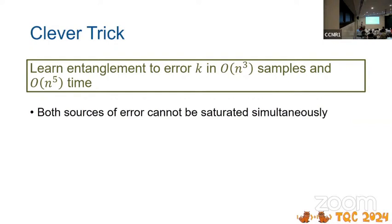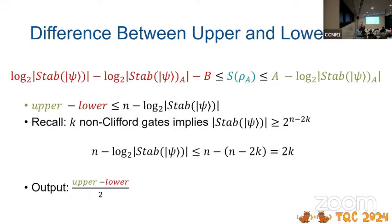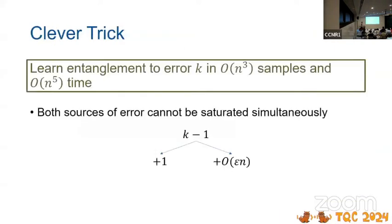I want to add at the very end that there's a clever trick that we use to get rid of all the error besides the inherent error from not knowing what those qubits are about. The number of samples is n cubed and the time is n to the fifth. The idea is that there's two sources of error and they cannot be satisfied simultaneously. There's an inherent k minus one error in the worst case, and there's either a plus one error from this step, or there's this O of epsilon n error we get from only learning the information approximately, but they both can't happen at the same time. If you set epsilon to be O of one over n, then both of these are just plus one, give or take.